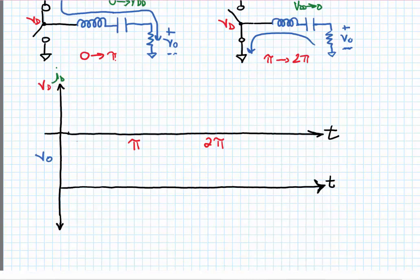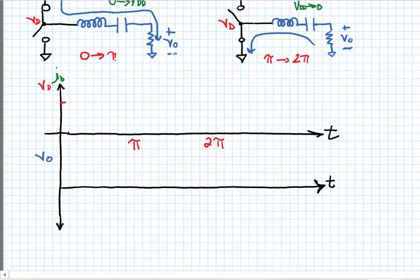So looking at this from a waveform perspective, the drain voltage is VDD from zero to pi, and then it becomes zero, and the drain current looks like a half-rectifying sine wave from pi to two pi.